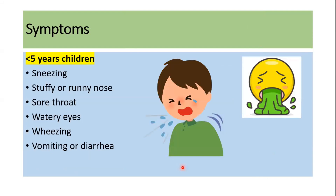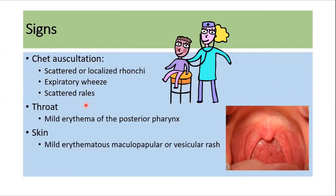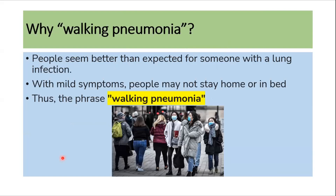Symptoms can differ in children under five years, who typically present with sneezing, stuffy nose, sore throat, watery eyes, vomiting, diarrhea, and wheezing. On examination, patients may not have obvious signs, but auscultation can reveal scattered or localized rhonchi, expiratory wheeze, and scattered rales. There may be mild congestion of the posterior pharynx, and sometimes a mild erythematous maculopapular or vesicular rash.